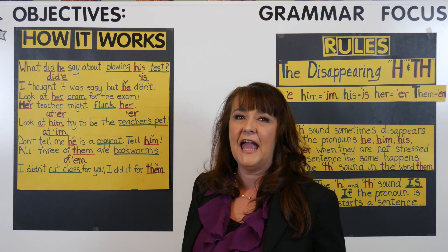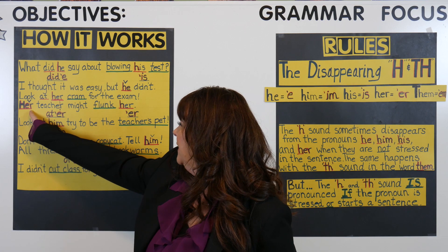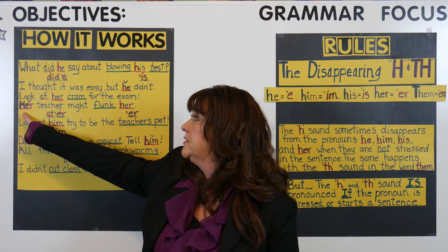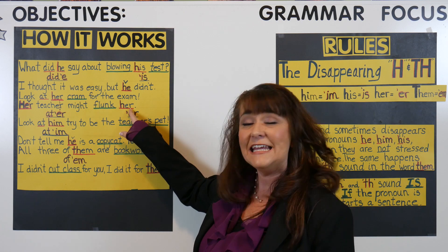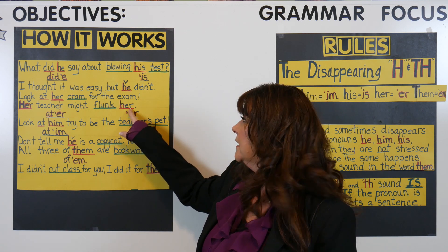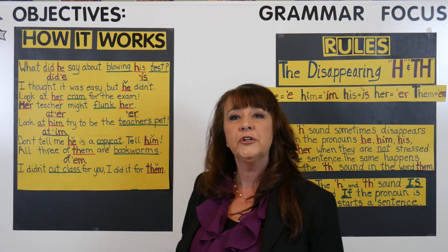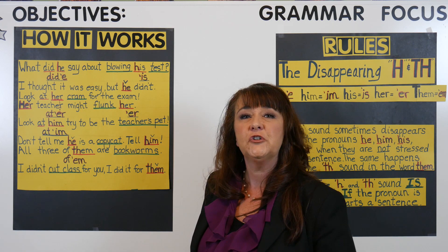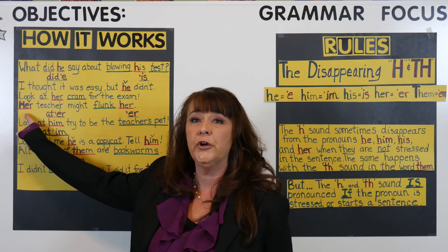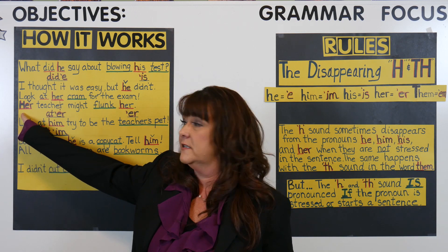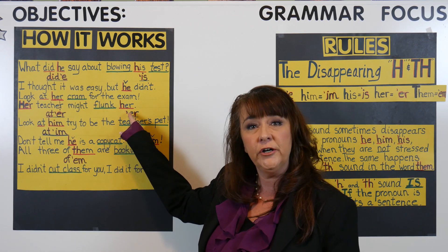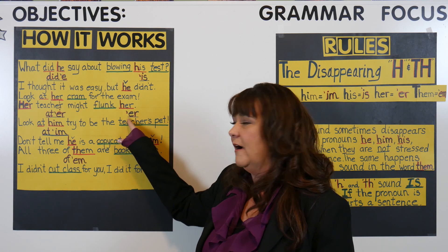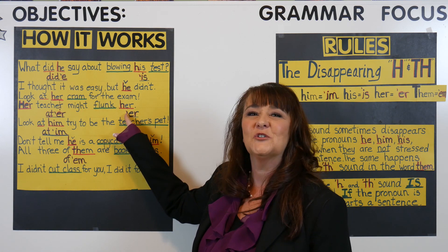Here's an example with one her that is stressed and another that isn't. Teacher talk: 'Her teacher might flunk her.' In street talk: 'Her teacher might flunk-er.' You still hear her teacher because it's stressed and starts the sentence. But flunk her sounds like flunk-er. Street talk: 'Her teacher might flunk-er.' Get in the hang of it? Let's try a few more examples.